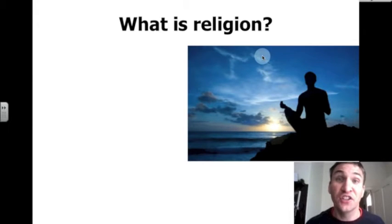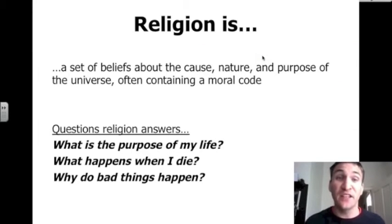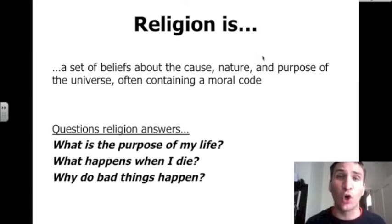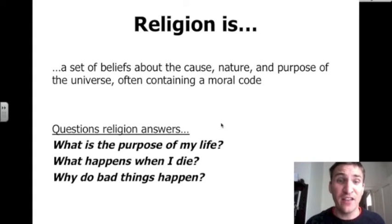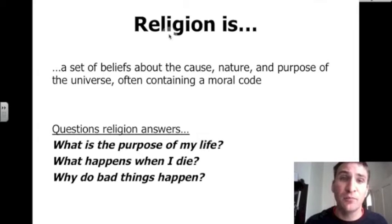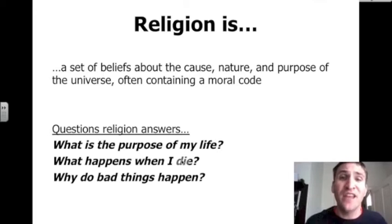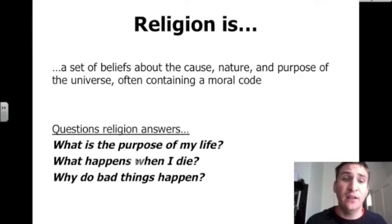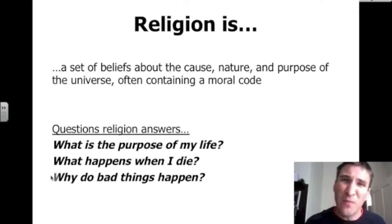What is religion? Let's back up and define what this is. Religion is a set of beliefs about the cause, nature, and the purpose of the universe, often containing a moral code. Religion answers many questions that we have about life. Three important ones: What is the purpose of my life? Religion provides purpose. What happens when I die? All religions offer an explanation of the afterlife. And religion also attempts to explain the seemingly inexplicable — why do bad things happen to good people?